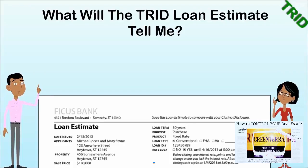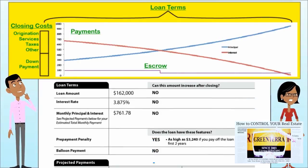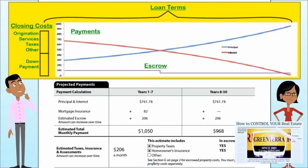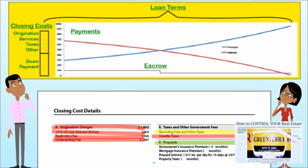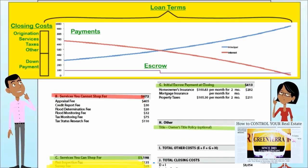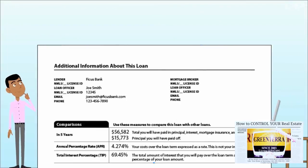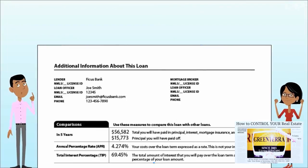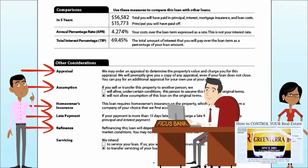What will the loan estimate tell me? The loan estimate documents the essential facts and terms of the real estate loan. It includes loan terms, projected payments, and loan costs, cash and costs at closing, the services for which you can and cannot shop, summary information with which to compare this loan to others, and other important details such as appraisal, insurance, late payment, refinancing, loan assumption policy, and whether this lender intends to service this loan.